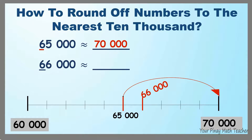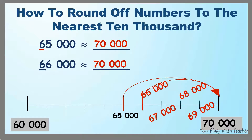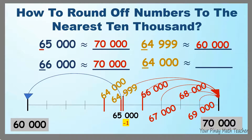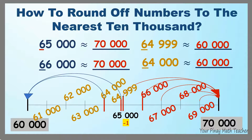How about 66,000? It is nearer to 70,000, so it has to be rounded off to 70,000. Also, 67,000, 68,000, and 69,000 and many more are to be rounded off to 70,000. What if we subtract one from 65,000 and get 64,999? Since 64,999 does not reach the middle — which is 65,000 — it has to be rounded off to 60,000. How about 64,000? Still 60,000. Also, 63,000, 62,000, and 61,000 and many more must be rounded off to 60,000.